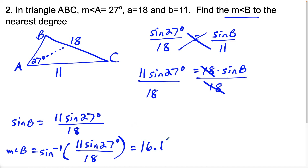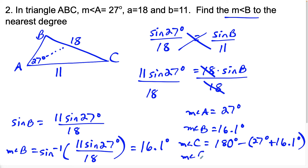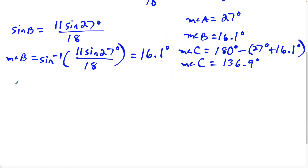So in case one, the measure of angle B is 16.1 degrees. We have angle A equals 27 degrees and angle B equals 16.1 degrees. To find angle C in case one, we subtract: 180 minus 27 plus 16.1 degrees, and the measure of angle C equals 136.9 degrees.